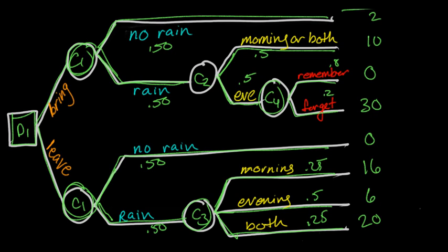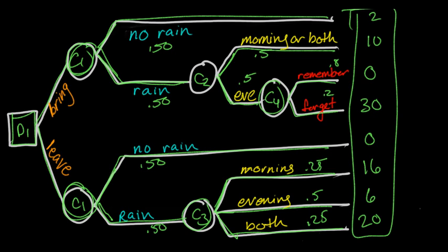Now we want to estimate a metric. The most common one I'll show is expected value, but we could also use worst case or most likely down both paths. To calculate expected value, we start from the end and fold back. So: 0.8 times 0 plus 0.2 times 30 gives us 6. The expected value here is 6 minutes.